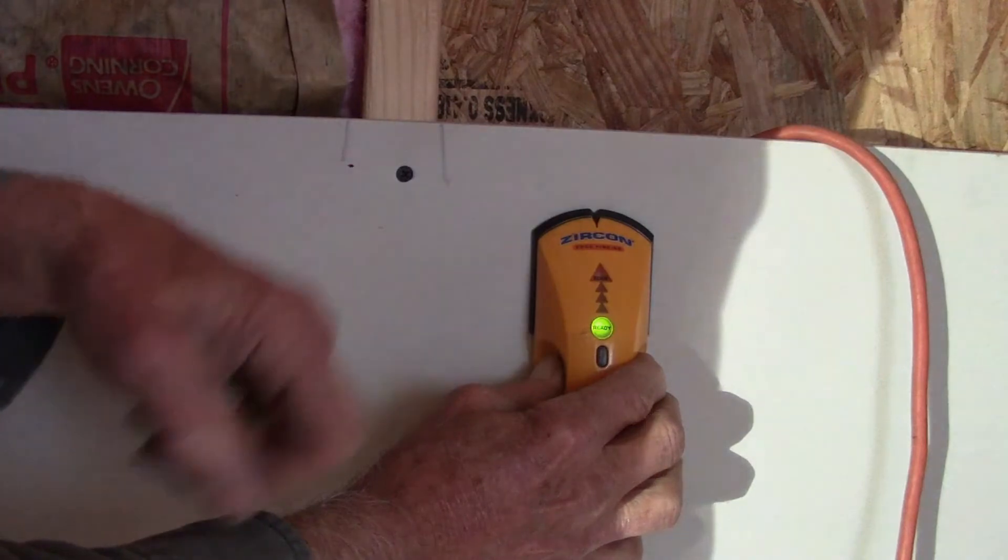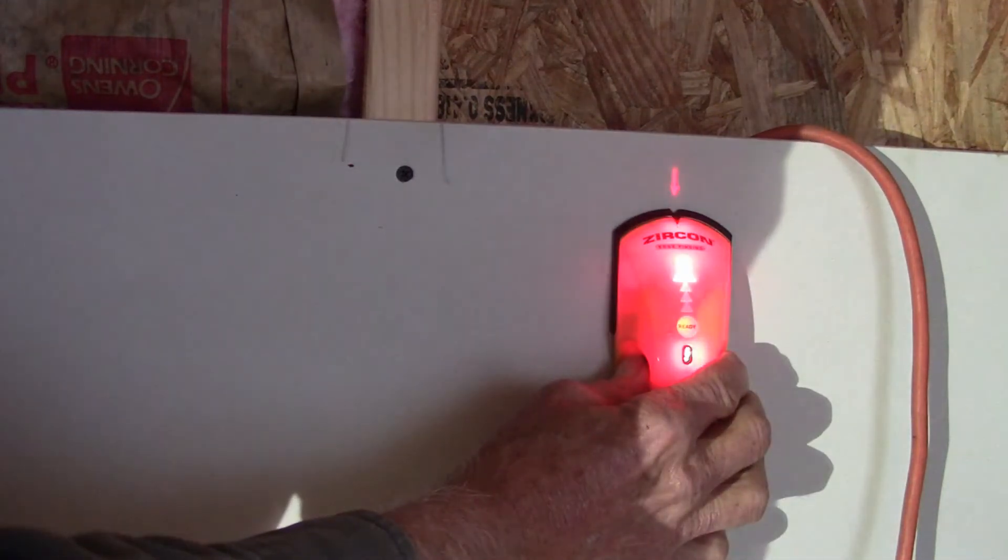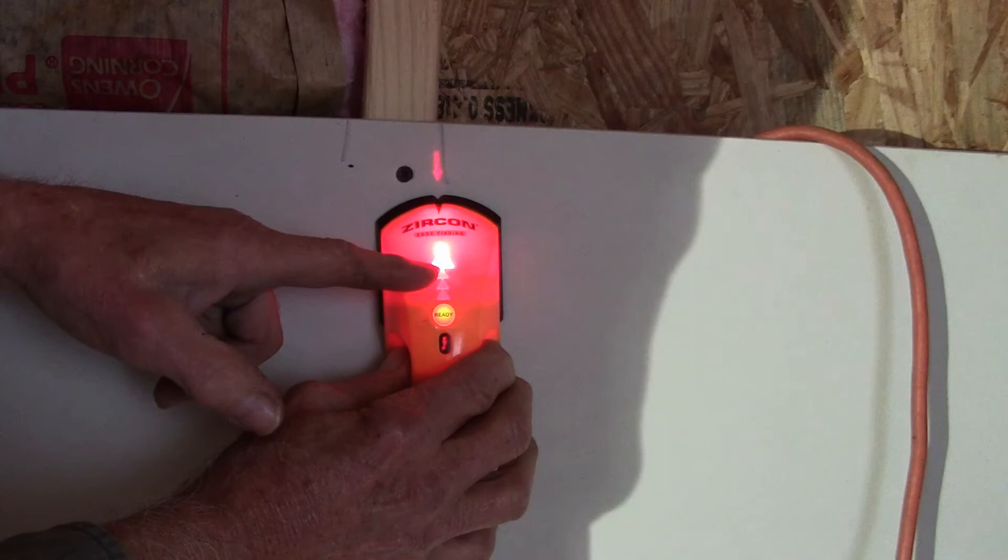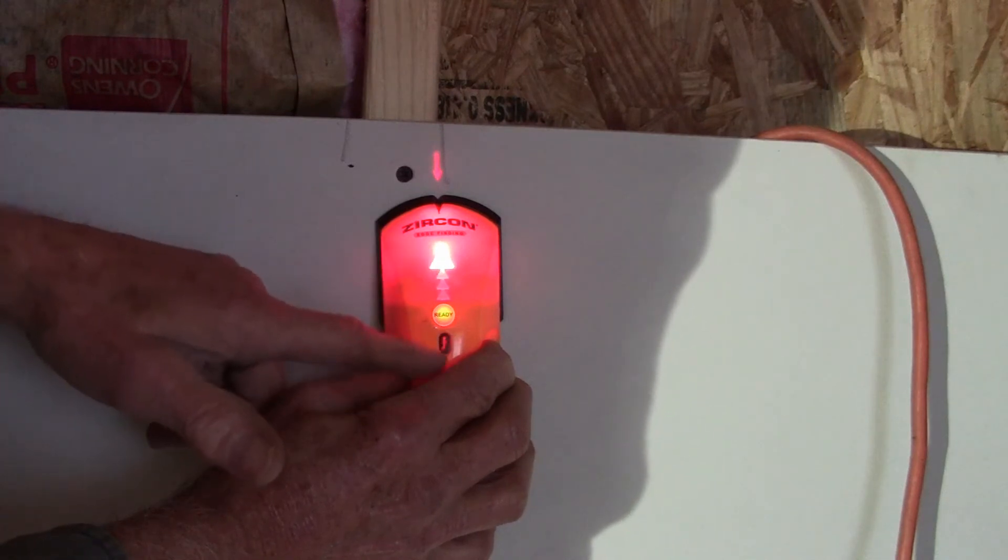This way it just shows the edge of the stud without it lighting up down here where the electrical light is.